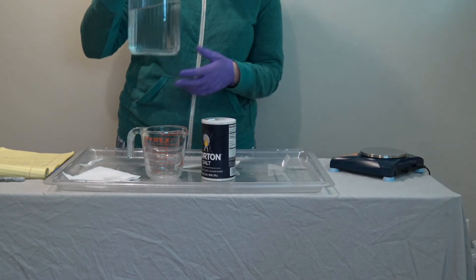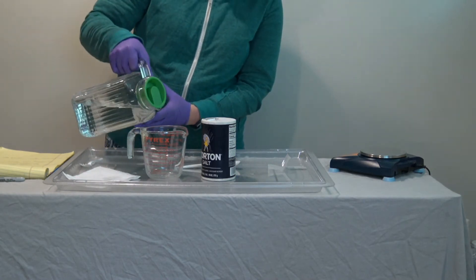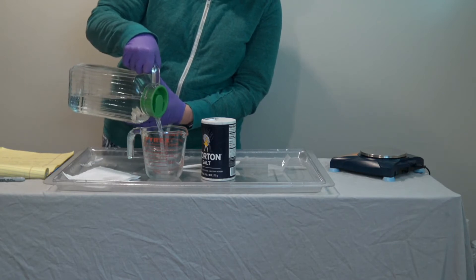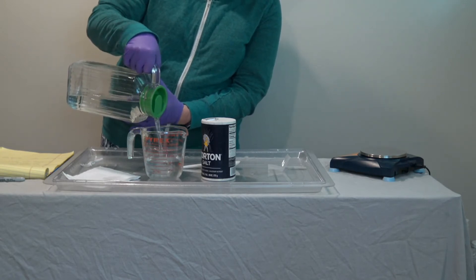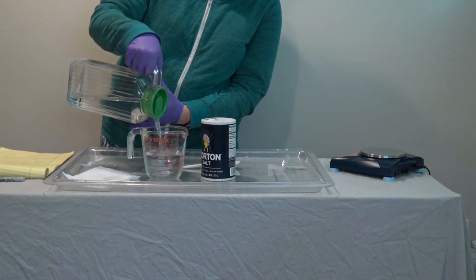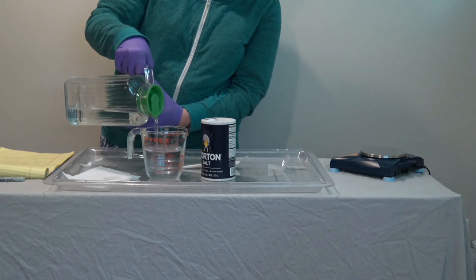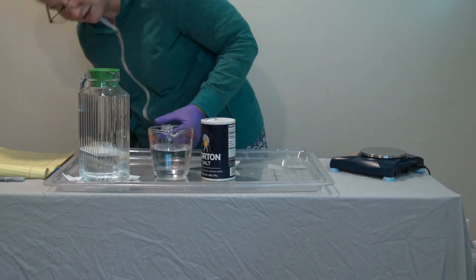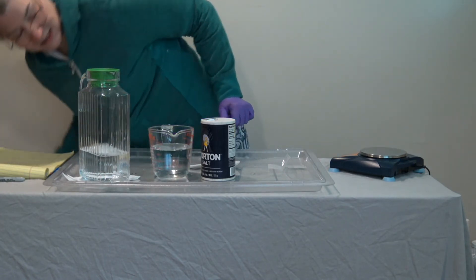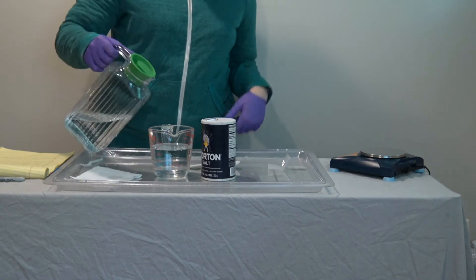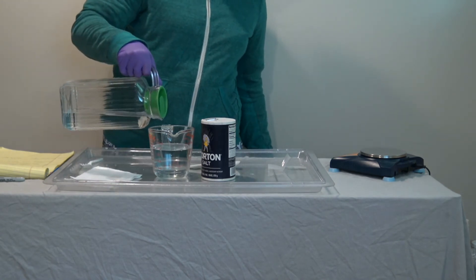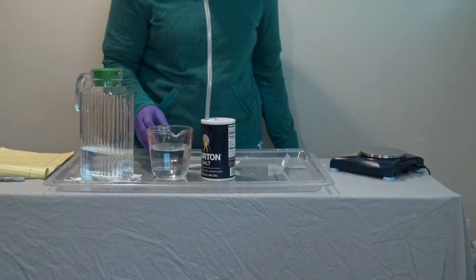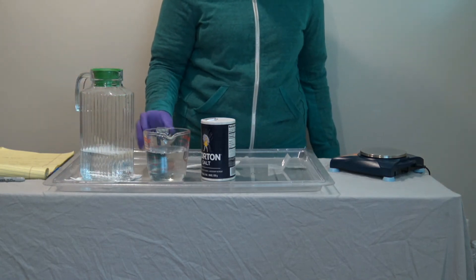Pour 400 milliliters of water that has fully come to room temperature into a measuring cup. You can use a graduated cylinder to measure it, or you can weigh it on a balance. 400 milliliters of water should be 400 grams. So I have my 400 milliliters of water.